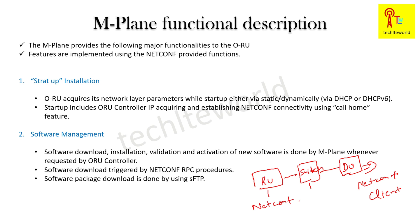Once the RU comes up, ORAN supports a plug-and-play kind of setup. The RU will try to obtain an IP address as the first task. There are two methods: either a static IP configuration, or using a DHCP server — Dynamic Host Configuration Protocol — which will provide the IP address to the RU.